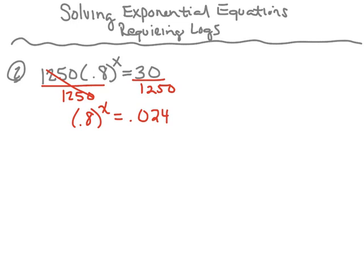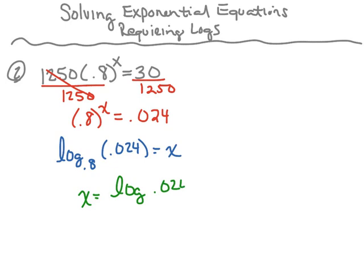Next I'm going to rewrite this exponential as a log. This now becomes log base 0.8 of 0.024 equals x. Now I'm going to use my change of base property, and that property says that x is going to equal the log of 0.024 divided by the log of 0.8. Entering this into my calculator, I get 16.71.